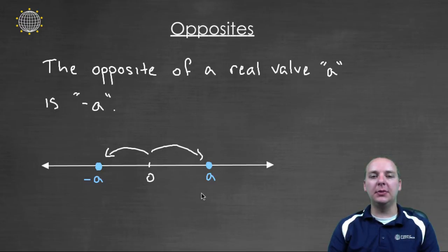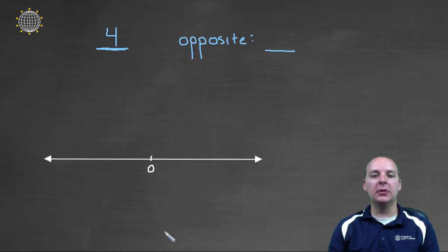So if one is to the left, the opposite will be to the right and vice versa. Let's run through a couple of examples to make this clearer.